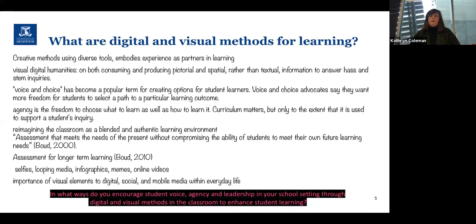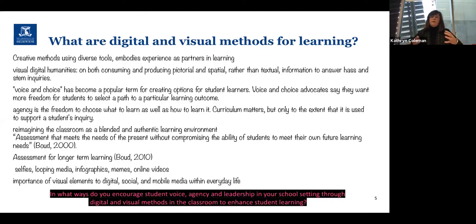Voice and choice are words in this kind of environment that get thrown around a bit, but that popular term actually needs us to do something with it. Voice and choice advocates say they want more freedom for students to select a path, but what are they doing with it? I prefer to talk about voice and agency and leadership, because agency is the freedom to choose what we want and how we want to learn it. Curriculum matters, but practice matters inside that as well. How do we integrate and intertwine those things so that we get the best out of an inquiry with students as co-laborers, co-designers, co-thinkers and co-learners?